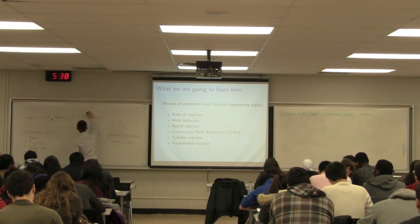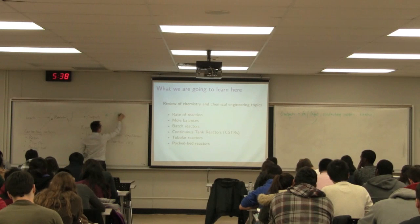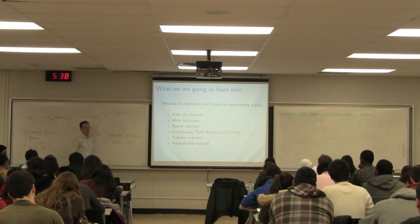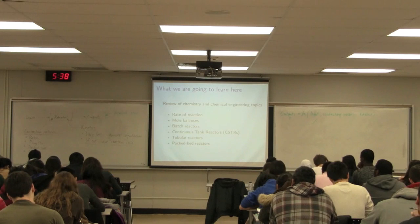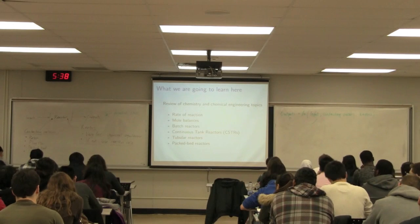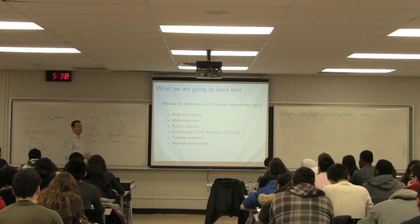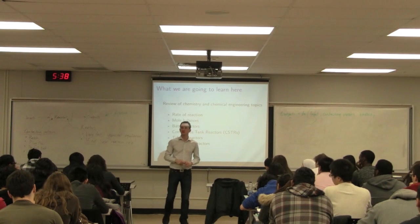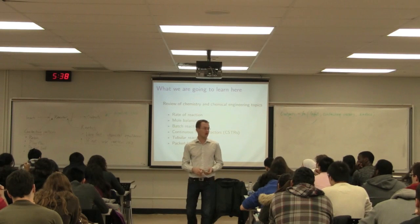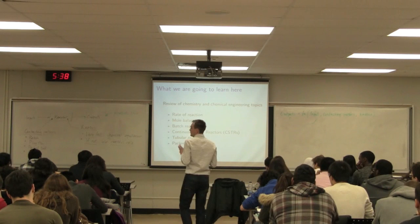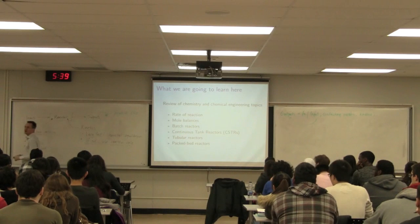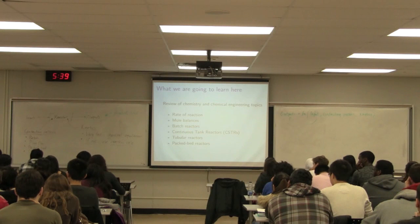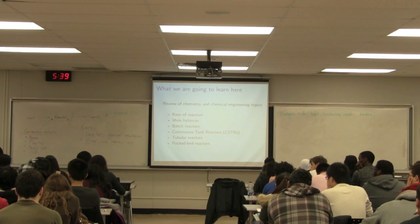We're building mathematical models that relate input, contacting pattern, and kinetics to predict the output. We usually know the inputs: concentrations, flow rates, temperature. We have some freedom to choose and specify these. We may have constraints — required to use a certain reactant at given purity and concentration — but we can usually choose temperature and flow rate. If we're designing from scratch, we can pick the reactor type: plug flow, CSTR, etc.